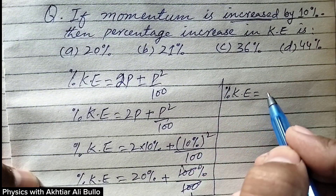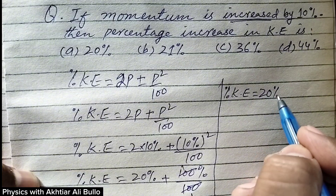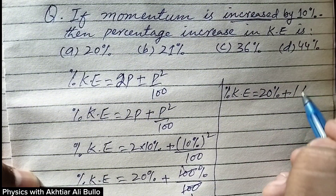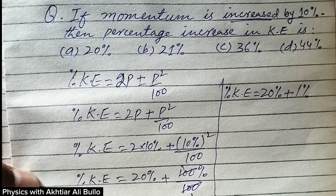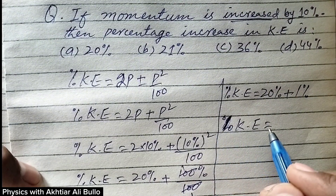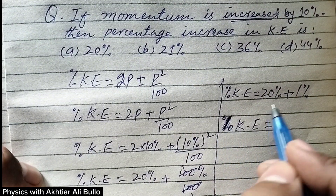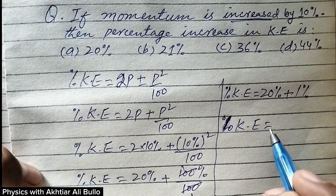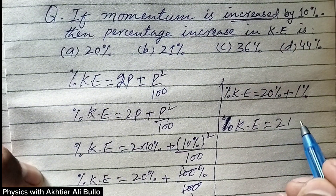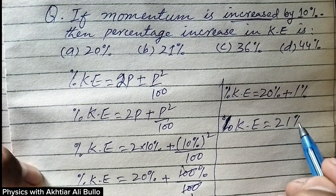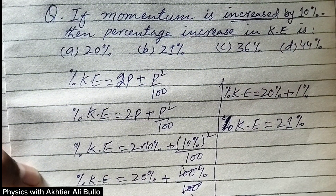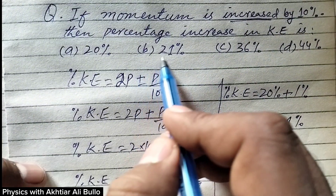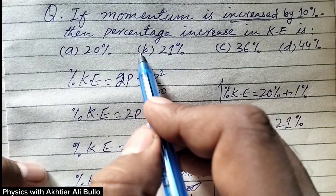The percentage increase in kinetic energy equals 20% + 1% = 21%. So the correct option is B, 21%.